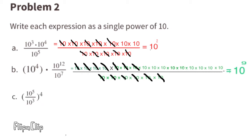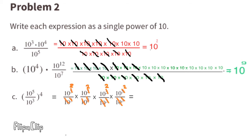C: 10 to the power of 5 divided by 10 to the power of 3, all to the power of 4. This means we'll have 10 to the power of 5 times itself 4 times over 10 to the power of 3 times itself 4 times. We cancel out 10 to the power of 3 on the bottom and take away 3 from 10 to the power of 5, leaving 10 to the power of 2, four times over. That means we're multiplying 10 times itself 8 times, so the answer is 10 to the power of 8.